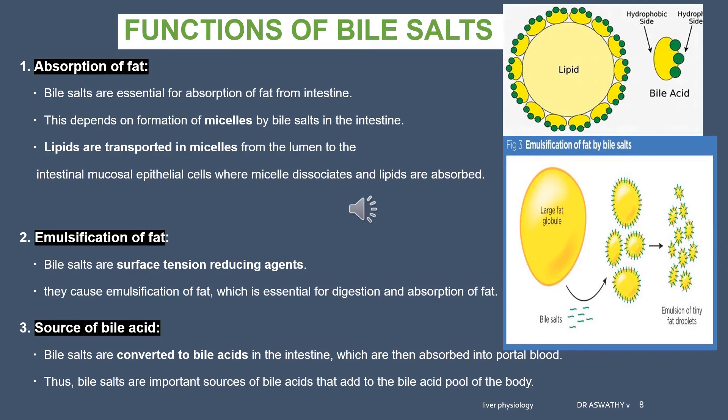Bile salts also help in emulsification of fat. Big fat molecules attach to bile salts via the lipophilic portion, and the bile salts reduce the interfacial tension of the globule. During agitation — when the small intestine performs movements like segmentation and peristalsis — the fat molecules are split up. When the interfacial tension is reduced and molecules are split up, pancreatic lipase gets more surface area for its digestive activity. So bile salts help in emulsification of fats.